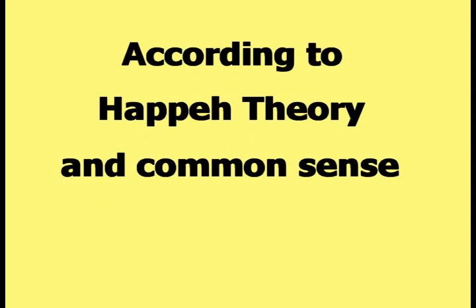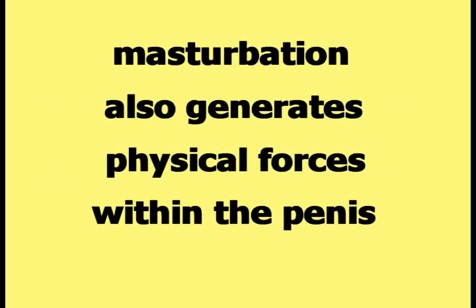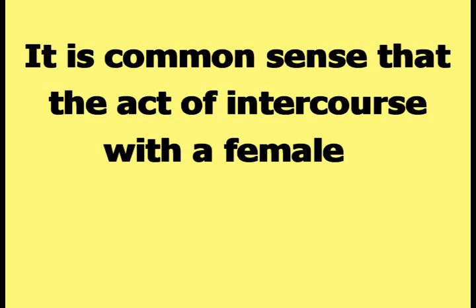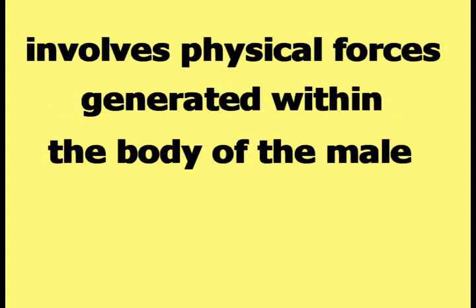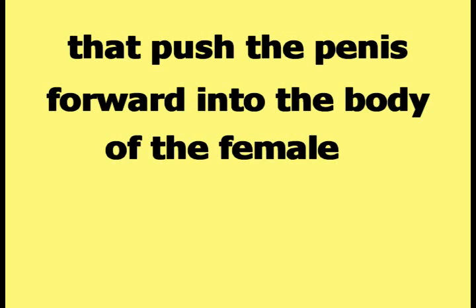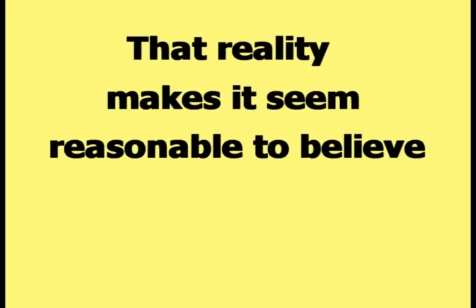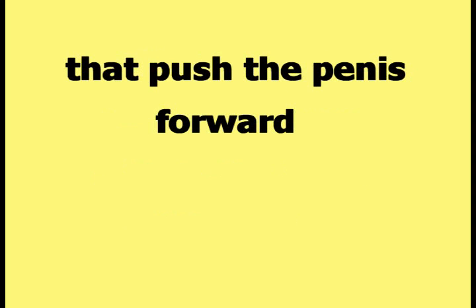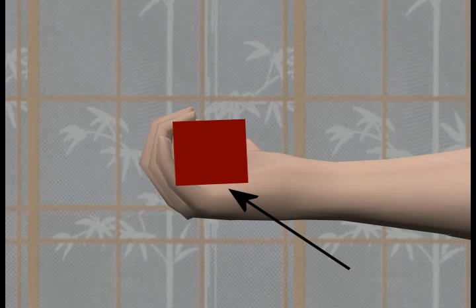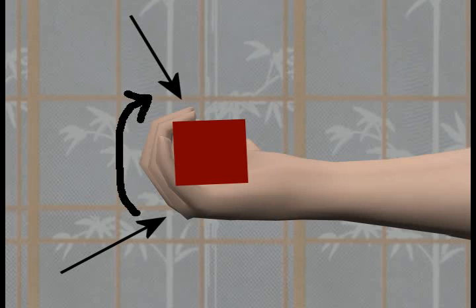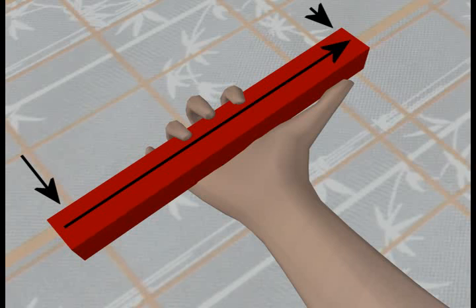According to happy theory and common sense, masturbation also generates physical forces within the penis. It is common sense that intercourse with a female involves physical forces generated within the body of the male that push the penis forward. Sexual stimulation of the penis by masturbation would also generate physical forces that push the penis forward. According to happy theory, when a male masturbates with the palm of the right hand underneath the penis and the fingers curling from the bottom to the top, the physical forces travel from the back of the penis to the front — the same direction the thumb of the masturbating right hand is pointing.